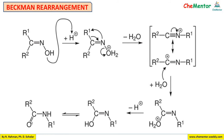Then keto-enol tautomerism gives the amide product. One very important thing to remember is which alkyl group will migrate. In the case of an asymmetrical ketone or aldehyde used to form the oxime, always remember: the alkyl group which is trans to OH in the oxime will undergo migration.